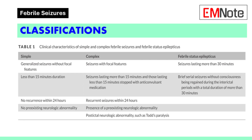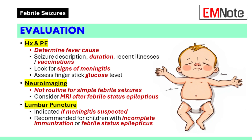Febrile status epilepticus is the most common cause of status epilepticus in children. Evaluation should begin with a history and physical examination to determine the cause of the fever. Key historical features include a description of the seizure and its duration, recent illnesses or antibiotic use within 48 hours, personal or family history of seizures or epilepsy, and recent vaccinations.